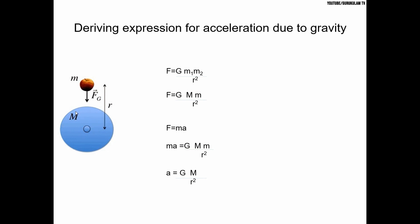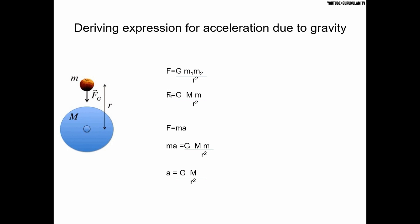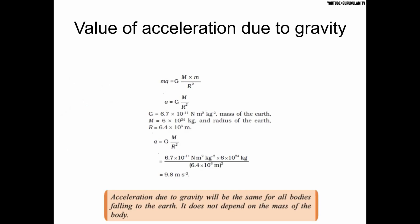If we consider the earth with mass capital M and an object with mass small m, according to universal gravitation, F equals G times M by r squared. Using Newton's second law F equals ma, we get a equals G times M by r squared. This gives us the acceleration due to gravity.